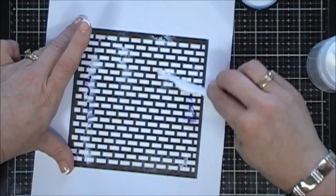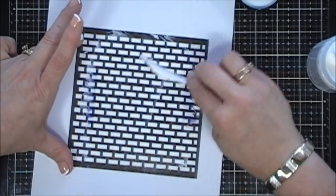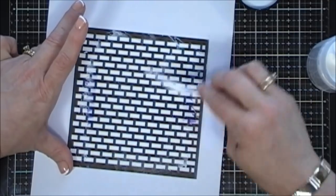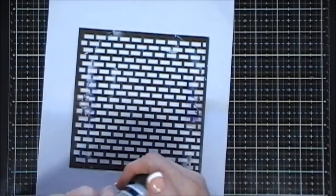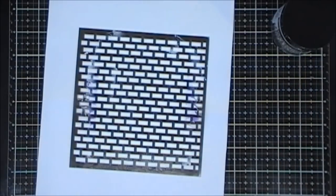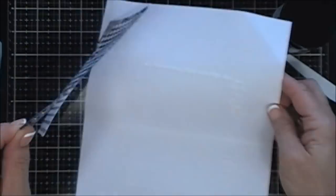When it dries, it dries a matte finish and you're able to go over it with your colored sprays, even your distress inks, and that's what I'm going to do today. Once that's all done, I'm going to carefully remove my stencil from my front panel here.